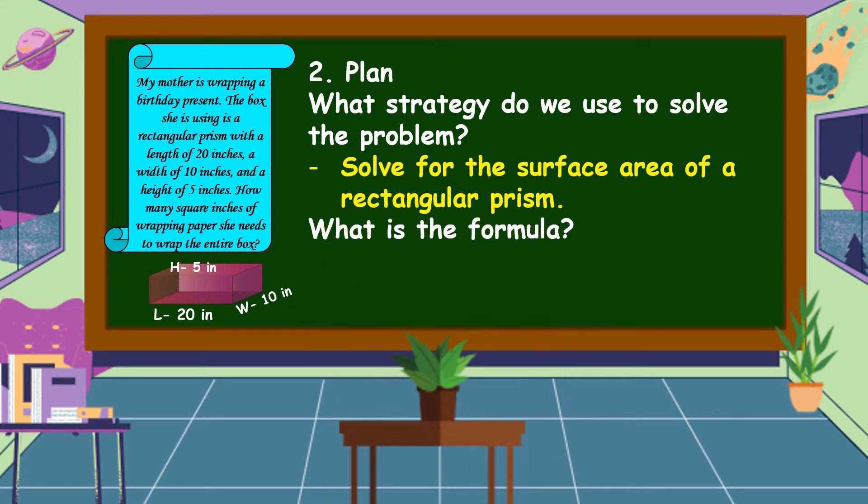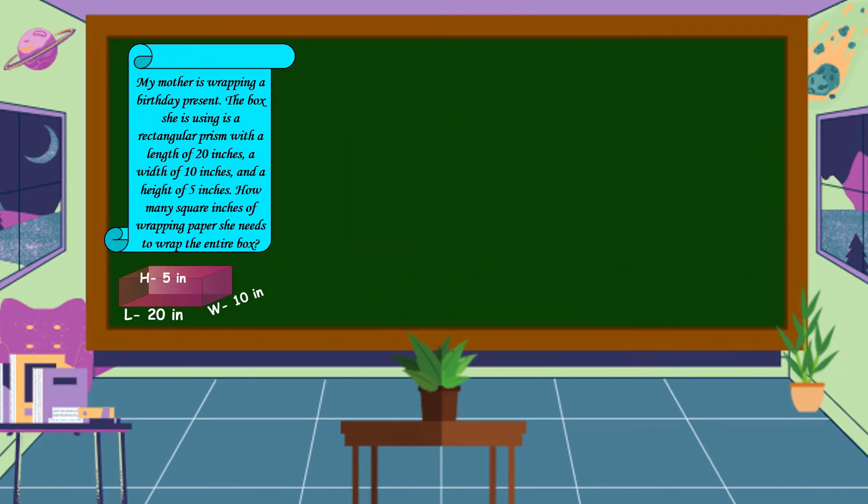What is the formula to find the surface area of a rectangular prism? Alright! The formula is surface area of a rectangular prism is equal to 2LW plus 2LH plus 2WH where L is the length, W is the width, and H is the height. We have already a plan. What is the next step?